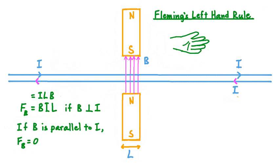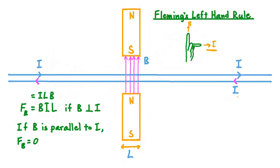Through Fleming's left-hand rule, we use the thumb and fingers on our left hand to figure out the direction of the magnetic force acting on a current-carrying wire. Here's how it works: we start by pointing our index finger in the direction that the magnetic field B points — in our example, that's upward to the top of the screen. Then, keeping that finger pointed that same direction, we point our middle finger in the direction the current I points. When we do this, it's important to use the direction of conventional current — that is, the direction positive charge would move in the wire. Lastly, keeping our index and middle fingers in these positions, we point the thumb on our left hand perpendicular to both of them. In this situation, that would be pointing out of the screen towards us.